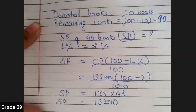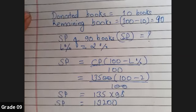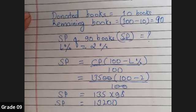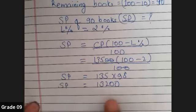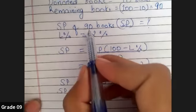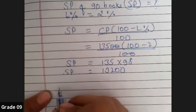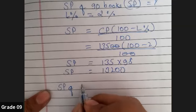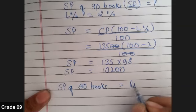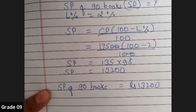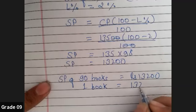Let's go through the question one more time. What is the question? Find the selling price of each book. So this is actually the selling price of 90 books. We have to find selling price of each book. We have to write: selling price of 90 books equals rupees 13,200. So selling price of one book is going to be...